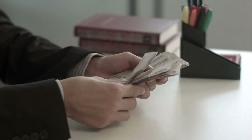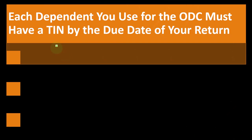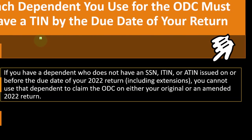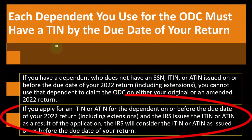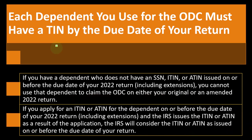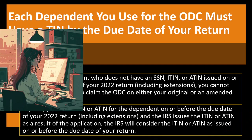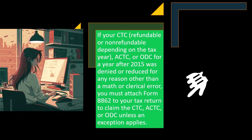Similar TIN requirements apply for the ODC. If you have a dependent who does not have an SSN, ITIN, or ATIN issued on or before the due date of your 2022 return, including extensions, you cannot use that dependent to claim the ODC on either your original or amended 2022 return. If you apply for an ITIN or ATIN on or before the due date and the IRS issues one, the IRS will consider it as issued on or before the due date.